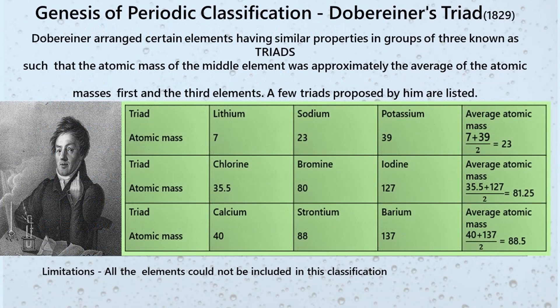Genesis of Periodic Classification: A very serious attempt at classification began with Dobereiner. Dobereiner arranged certain elements having similar properties in a group of three, known as a triad. He arranged the three elements having similar properties in the increasing order of their atomic mass. The atomic mass of the middle element was approximately the average of the atomic masses of the first and the third element. Some examples of triads are: lithium, sodium, potassium; chlorine, bromine, iodine; and calcium, strontium, barium. You can see the calculation given in the slide.